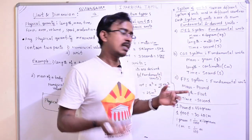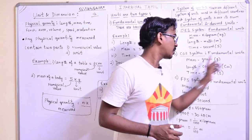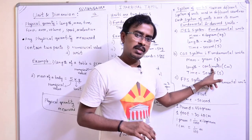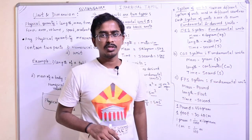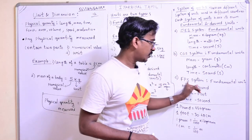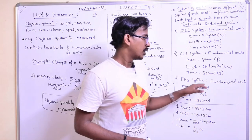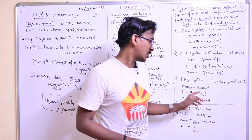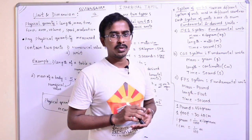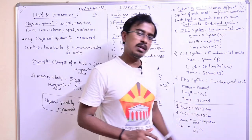CGS is another system of units. In the CGS system, there are fundamental units: mass is measured in gram, length is centimeter, time is seconds. The last one is the FPS system — FPS means Foot, Pound, and Second. In this system, mass is measured in pound, length is measured in foot, time is measured in seconds.